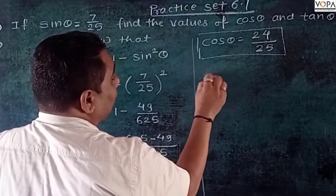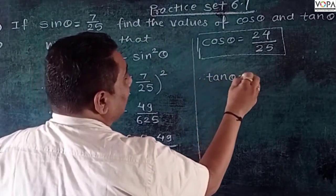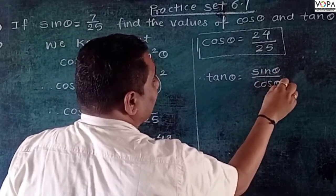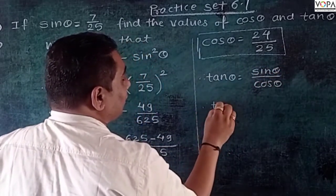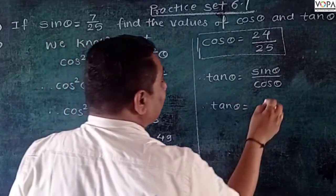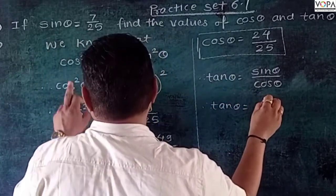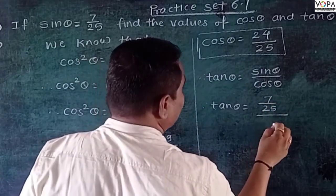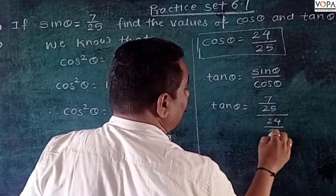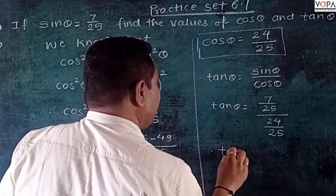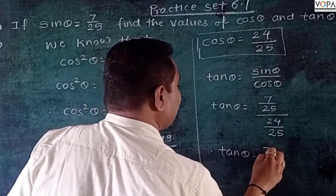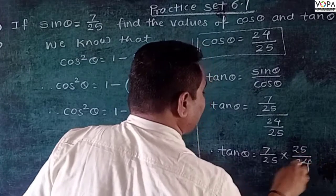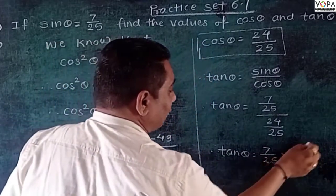So we know that tan θ = sin θ / cos θ. Therefore tan θ = (7/25) / (24/25), which equals (7/25) × (25/24).